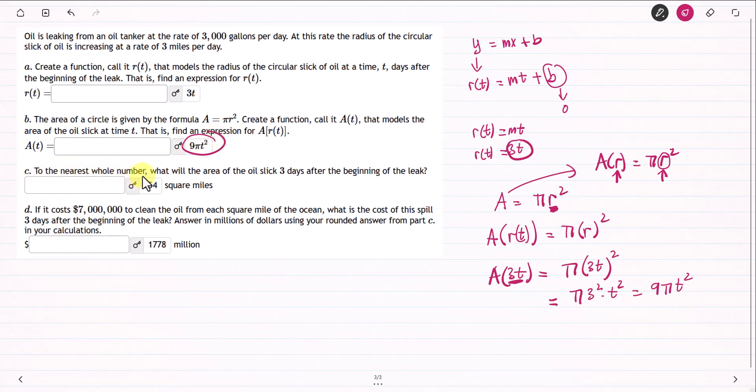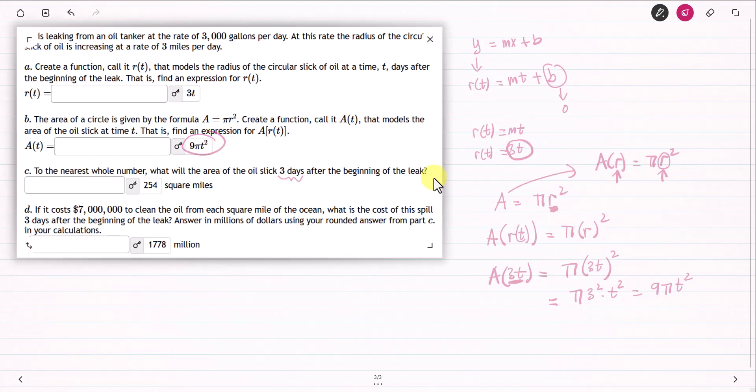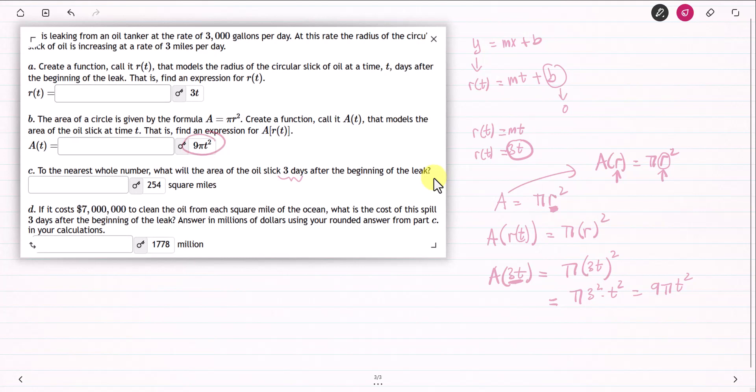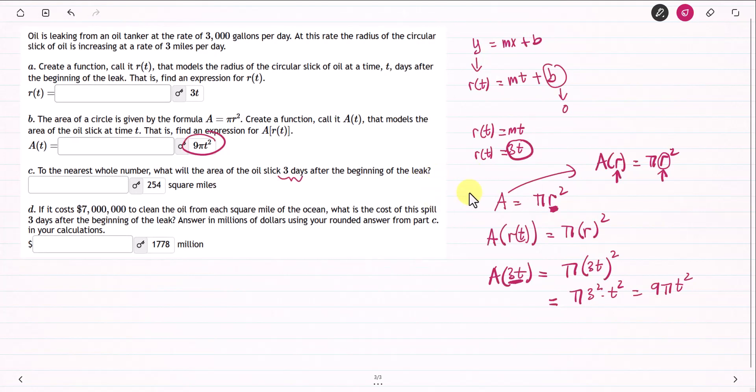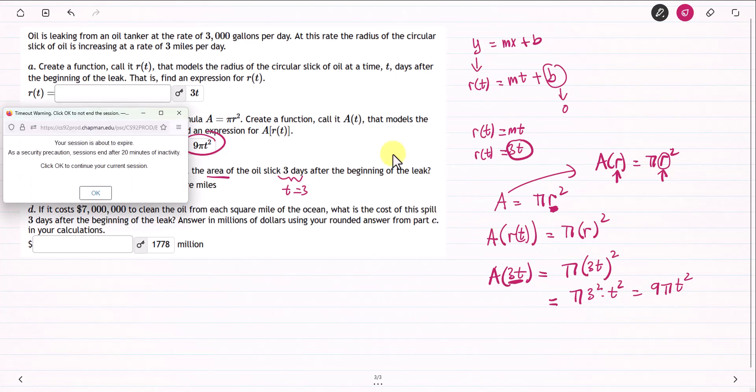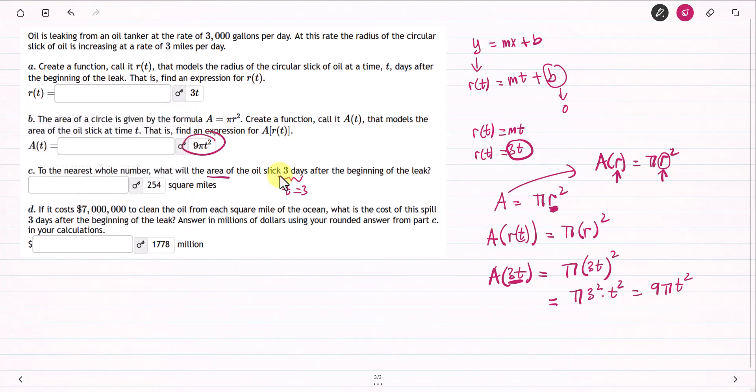Next problem. To the nearest whole number, what will the area of the oil slick be three days after the beginning of the leak? They give you the time in 3 days. From the problem, t is the time in days. So 3 days means the value should be t equals 3.